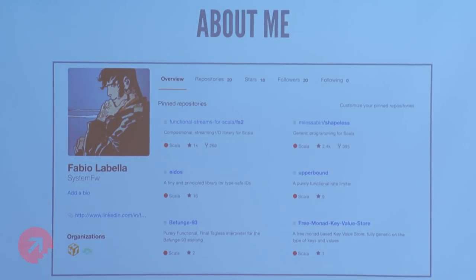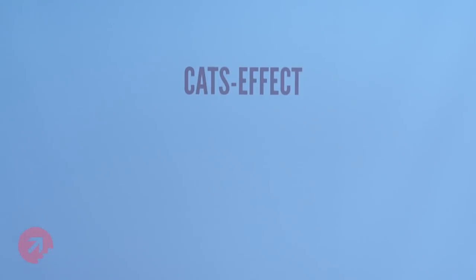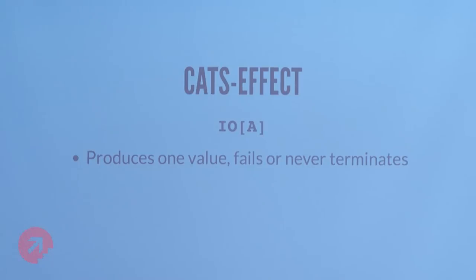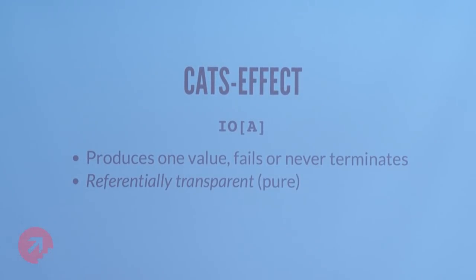Let's get straight into it by talking briefly about cats effect. Cats effect is a library that exposes several things, among which this type called IO. IO of A is a data type that represents a computation that when run will either produce one value, or fail, or never terminate. This looks like Future a little bit, but there's a crucial difference: IO is referentially transparent, it's pure, there are no side effects. IO suspends side effects, and this is compositional because of the lack of side effects.